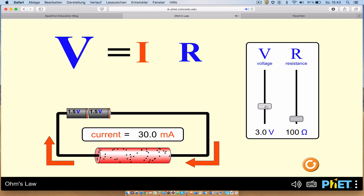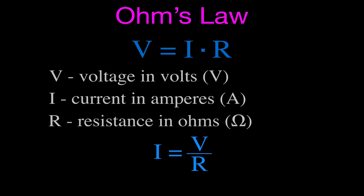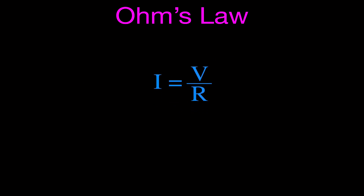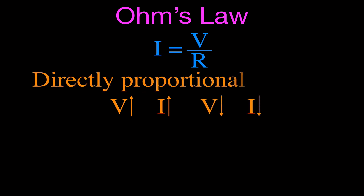We can summarize that: when the voltage increased, the current increased; when the voltage decreased, the current decreased. That is what we call a direct relationship — the current and the voltage are directly proportional to each other. The current is directly proportional to the voltage.